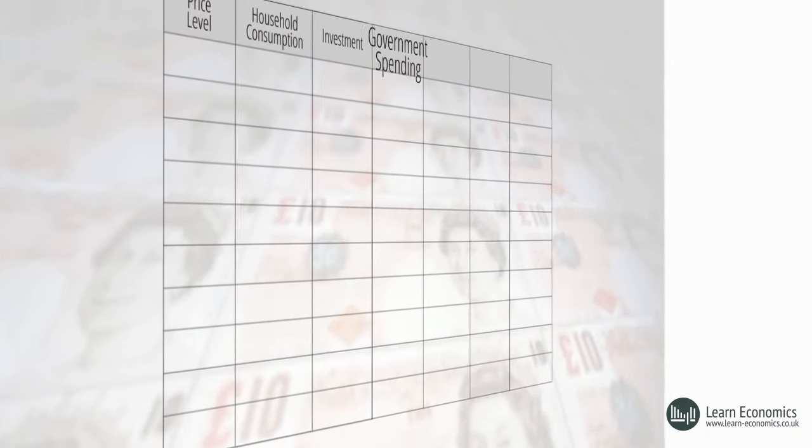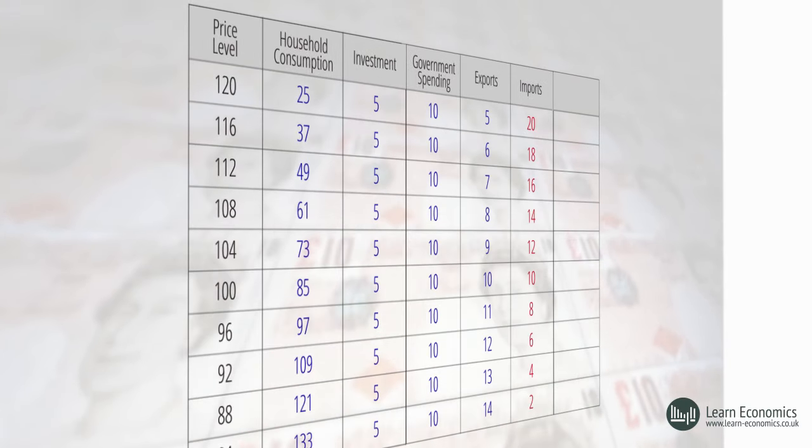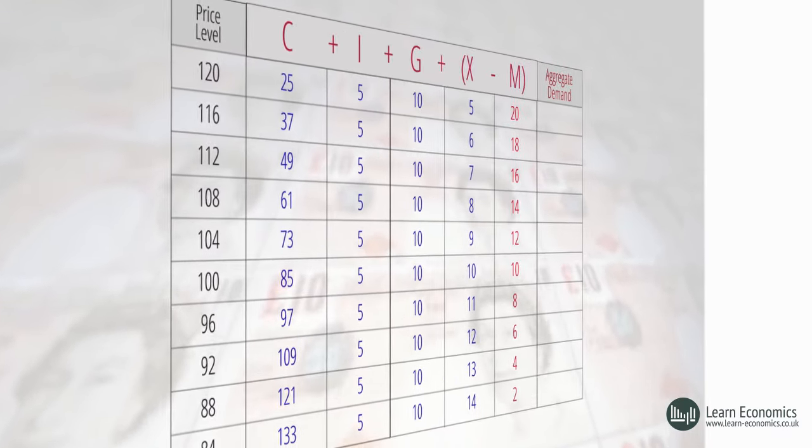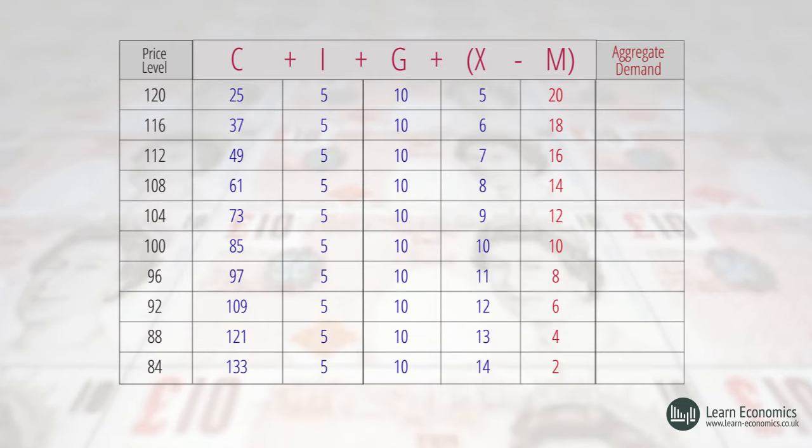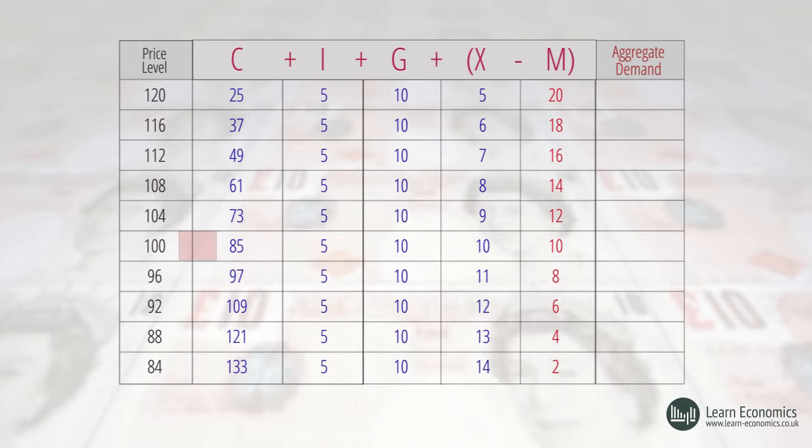In this simple example, we can see how the components of AD will respond to different hypothetical price levels. The model starts by assuming the quantity of money is constant and nominal wages are fixed. All other variables, other than the price level, are also assumed to be constant. So, at a price level index of 100 in our example, consumer spending is 85 billion, investment is 5 billion, government spending is 10 billion, and trade is in balance, with both exports and imports at 10 billion. This gives us an AD of 100 billion. At a lower hypothetical price level, at 96, AD increases to 115 billion, and at a higher price level, at 104, AD falls to 85 billion.